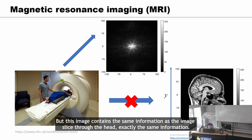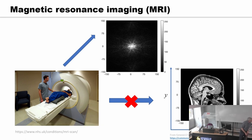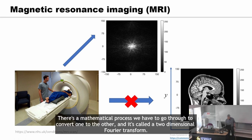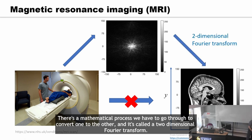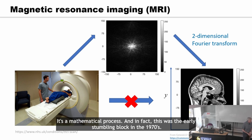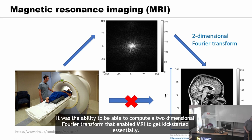This speckle image contains exactly the same information as the image sliced through the head. There's a mathematical process we have to go through to convert one to the other, called a two-dimensional Fourier transform. In fact, this was the early stumbling block in the 1970s — the ability to compute a two-dimensional Fourier transform was what enabled MRI to get kick-started.